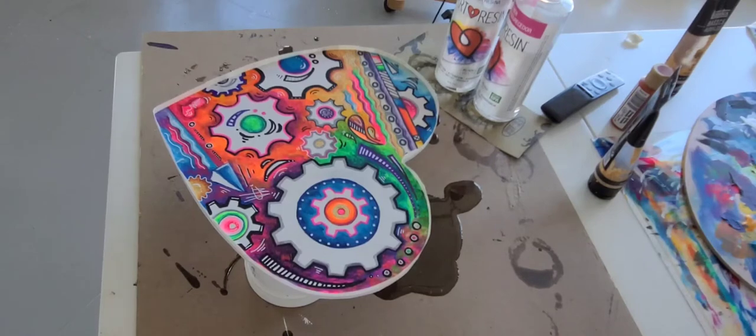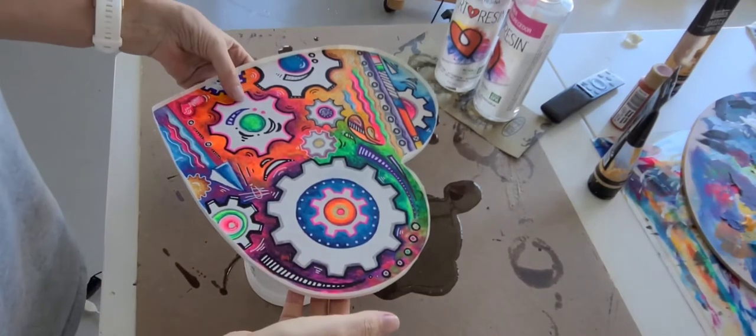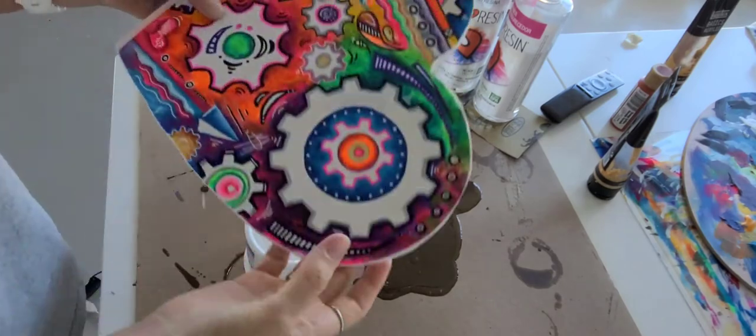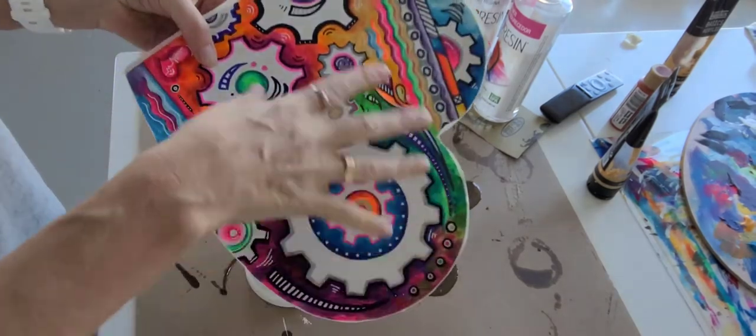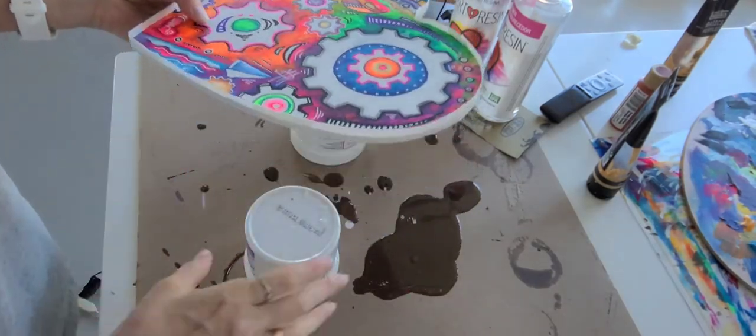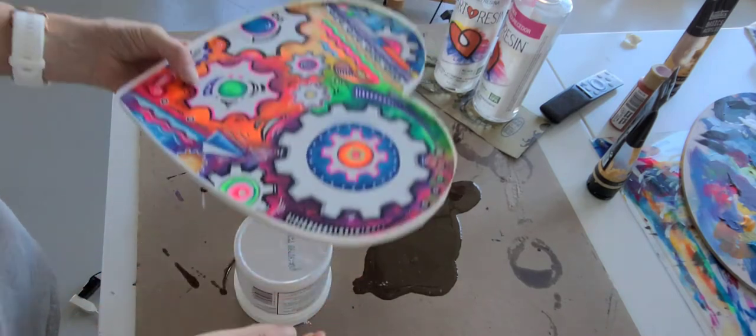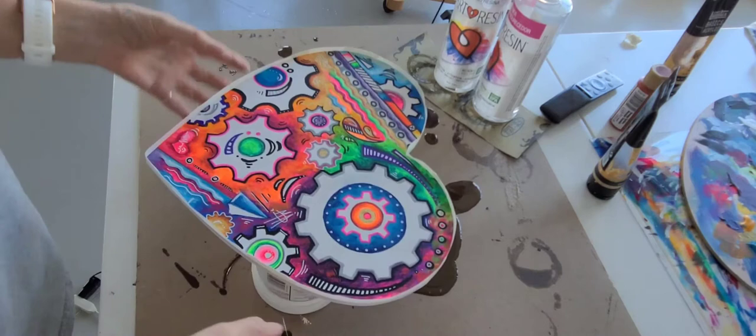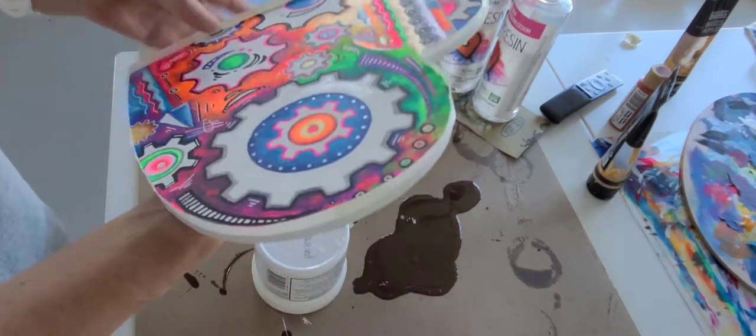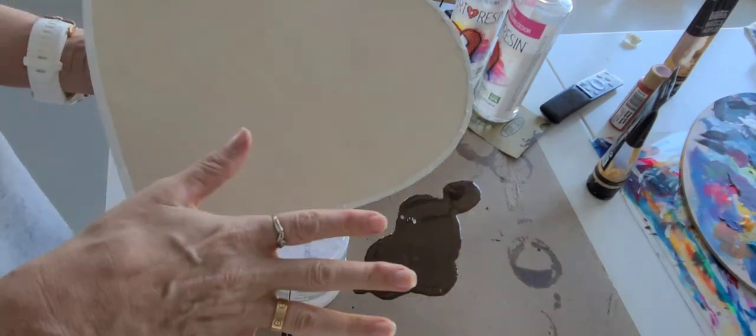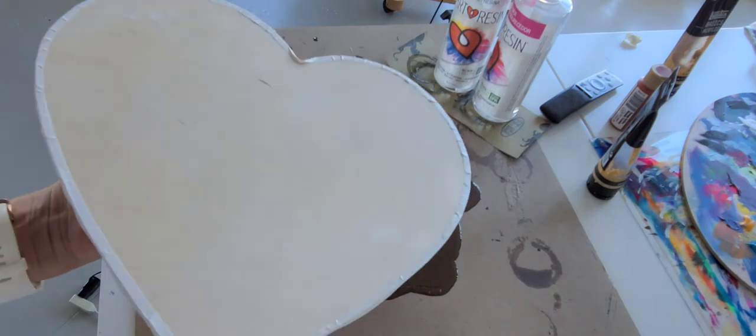I'm getting ready to pour the resin on this wooden heart with gears and a cycling theme. I have a couple of recycled plastic containers here that I use to set these on for the pour, and I also take masking tape.